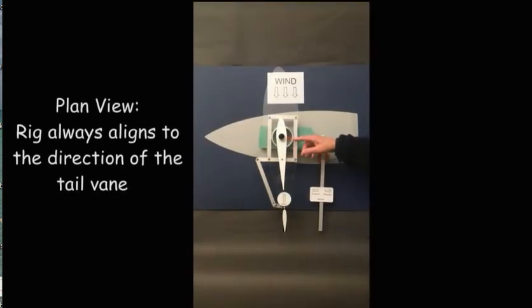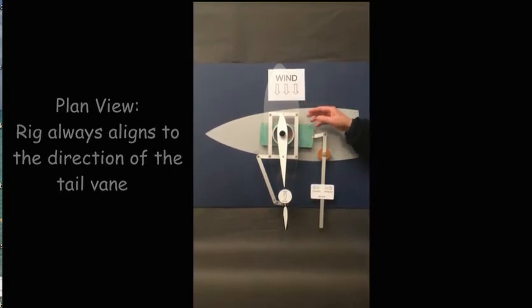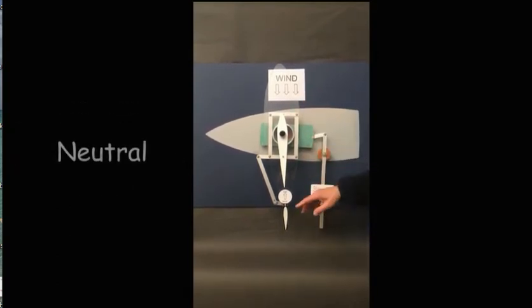Here we have a model, a plan view of a boat, with the wind coming on the starboard side. In practice, the wind can come from any side. Here is the wind vane.